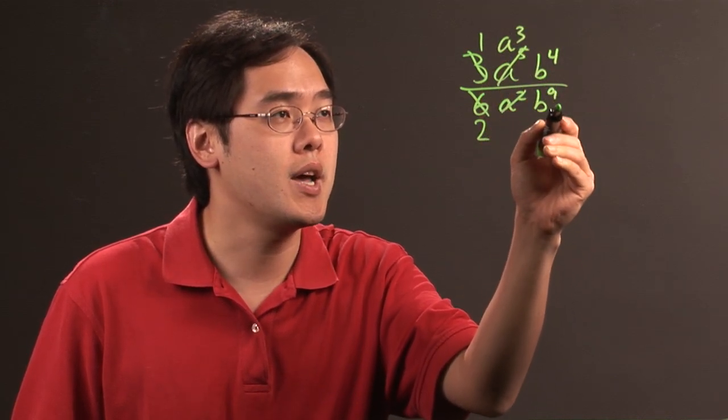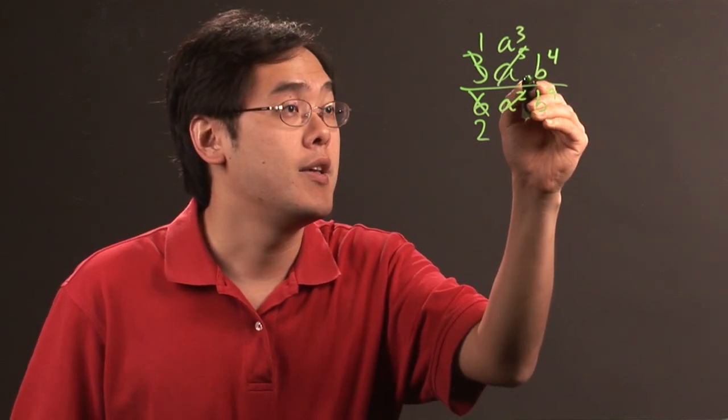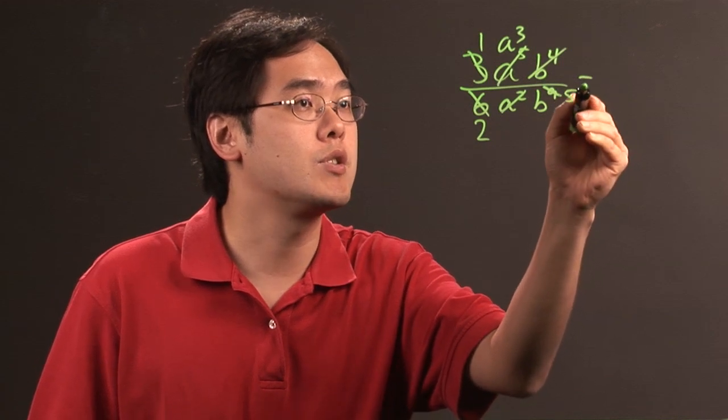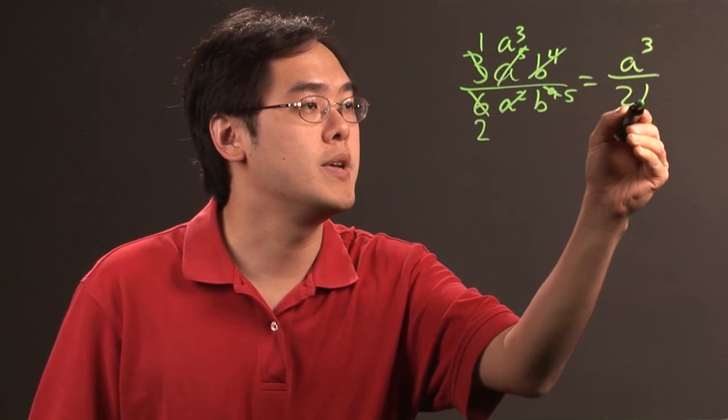And then with the b to the 4th and b to the 9th, because 9 is more than 4, it's actually got 5 more. The b to the 4th completely cancels and you have 5. So basically this expression reduces to a to the 3rd over 2b to the 5th.